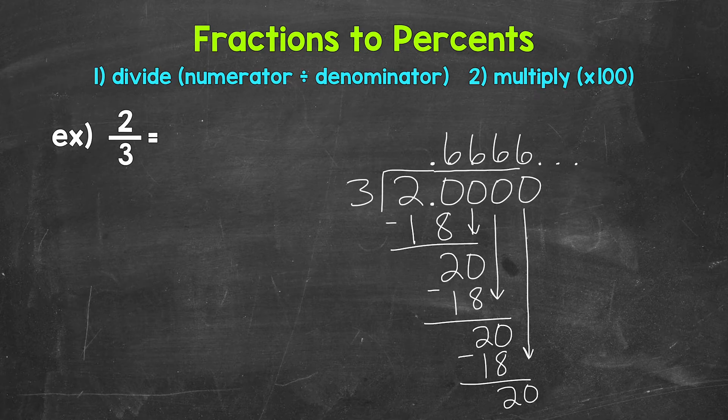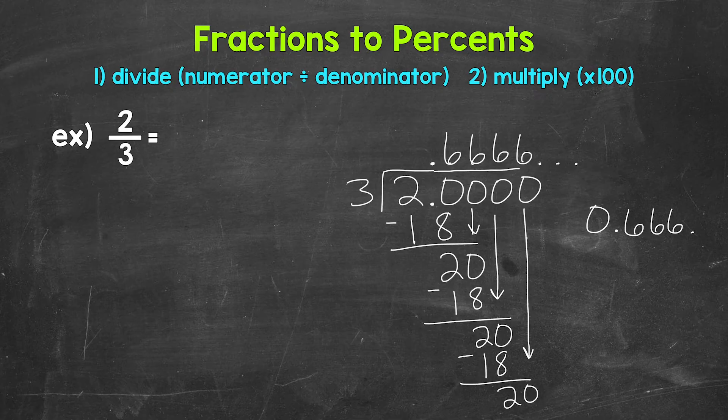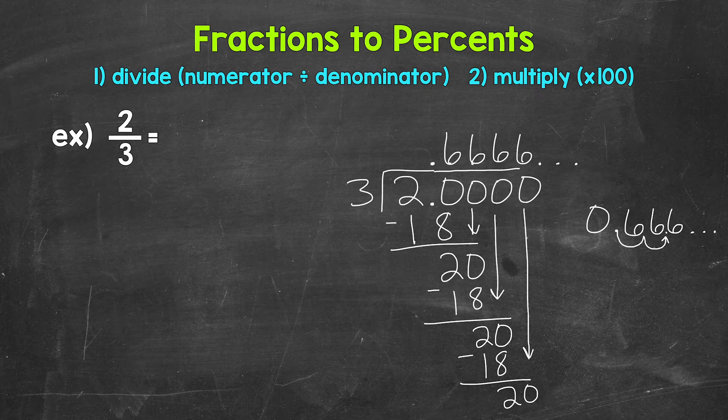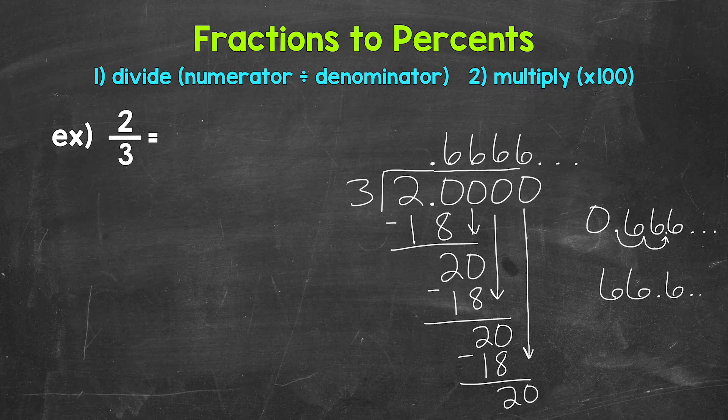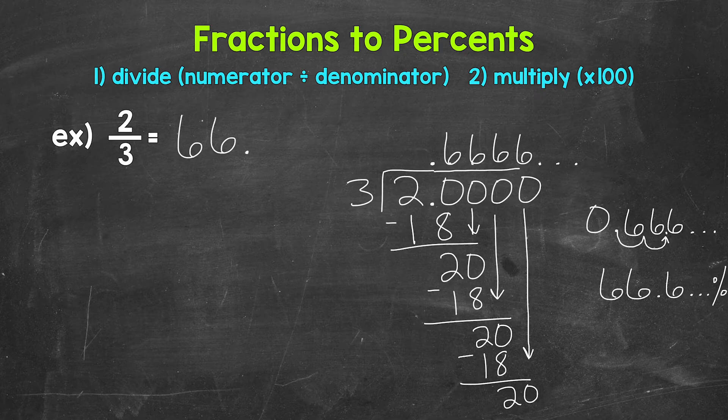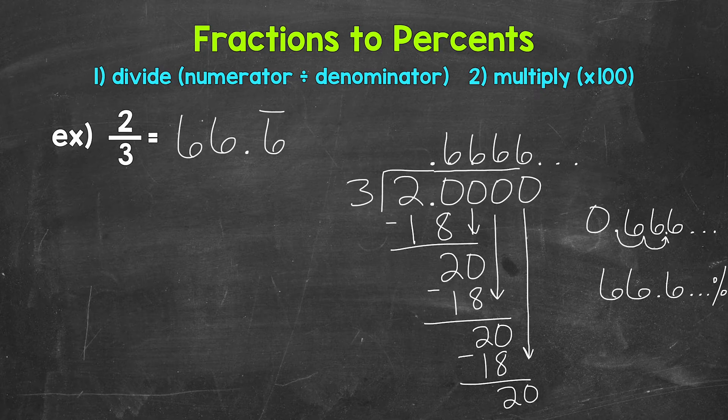So we can stop there and convert this decimal to a percent now by multiplying it by 100. We can multiply by 100 by moving the decimal twice to the right. So 0.6 repeating, we move the decimal once, twice to the right to convert this to a percent. This gives us 66.6 repeating percent.